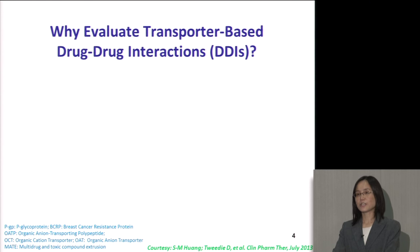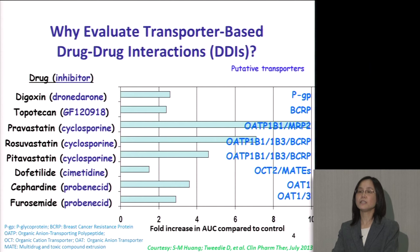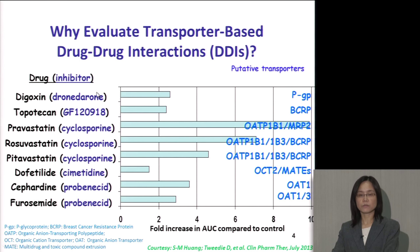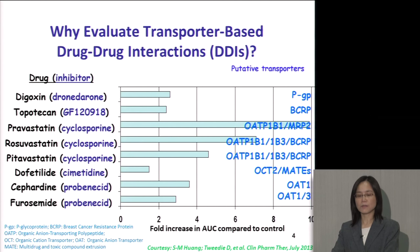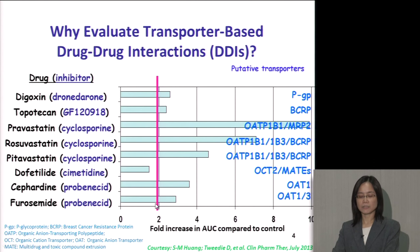Why do we need to evaluate transporter-based drug interactions? Historically, we paid a lot of attention to metabolism-based drug interactions. However, we found that some key drug interactions cannot be explained by metabolism-based mechanisms. For example, digoxin has a narrow therapeutic range and can be affected by talinolol, and this interaction is not mediated by metabolism because digoxin is not highly metabolized. The putative mechanism could be due to P-glycoprotein inhibition. Many of these transporter-mediated drug interactions can be quite significant, causing more than two-fold increased exposure of the affected drug.